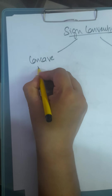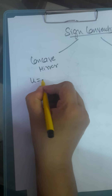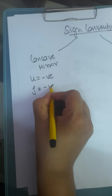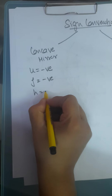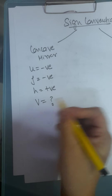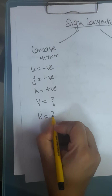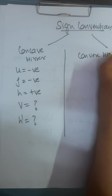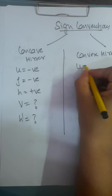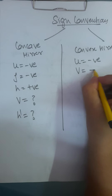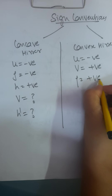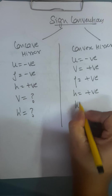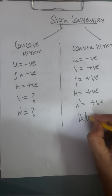For a concave mirror: U is negative, F is negative, H is positive, V can be anything — positive or negative, and H dash can also be both positive and negative. But for a convex mirror, U is negative, V is positive, F is positive, H is positive, and H dash is always positive.